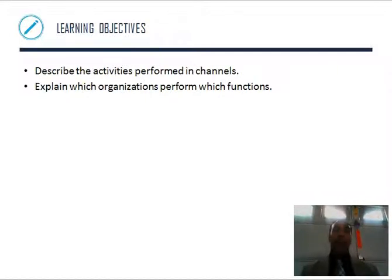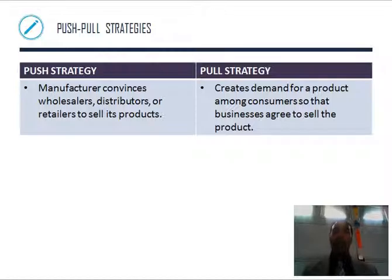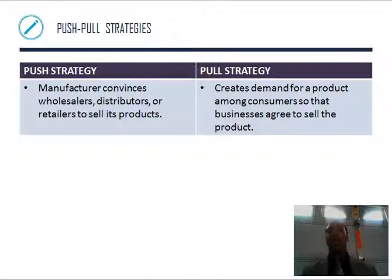More learning objectives: describe the activities performed in channels and explain which organizations perform which functions. You have the push versus pull strategies, which we've already gone over but will be touched on a few times throughout the course. The push strategy: a manufacturer convinces wholesalers, distributors, or retailers to sell its products — we're talking to the intermediaries and saying 'this is a great product, this is why you should sell it.' The pull strategy creates demand for a product among consumers so that businesses agree to sell it — if everybody wants a product, of course Macy's is going to sell it.